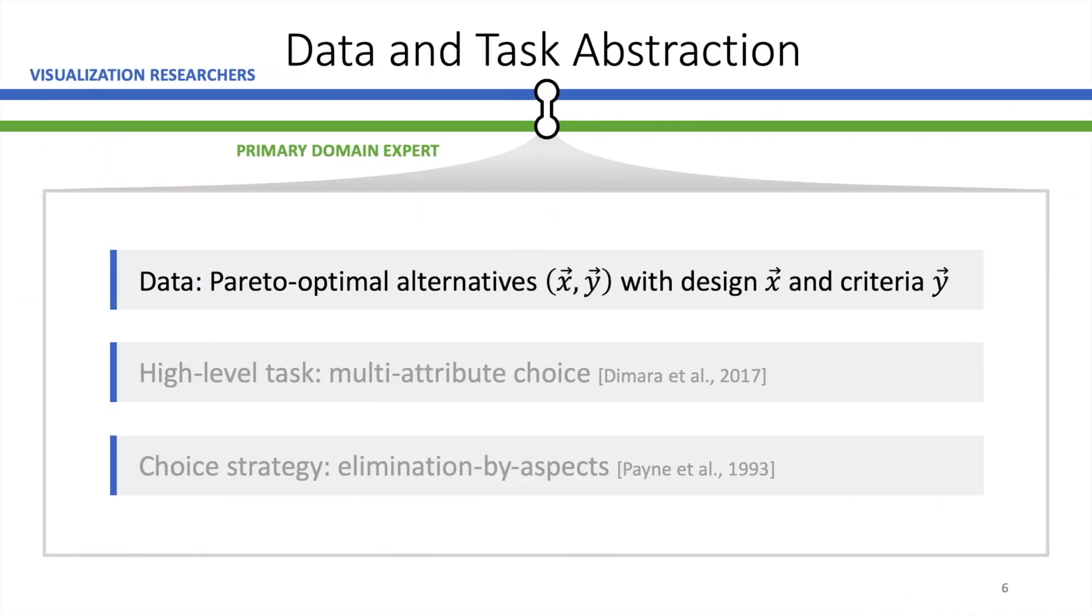We then started to translate our domain understanding into something that we, as visualization researchers, can design for. The alternatives to be visualized are basically data points consisting of about a dozen design parameter values and up to ten criteria values. The high-level task is to decide for the most preferred motor design. This is known as multi-attribute choice. The visual design should also take the expert's workflow into account, which we found to be most similar to what decision theory calls the elimination by aspect strategy.